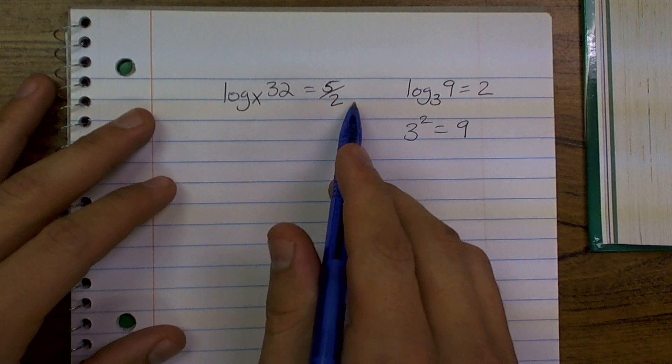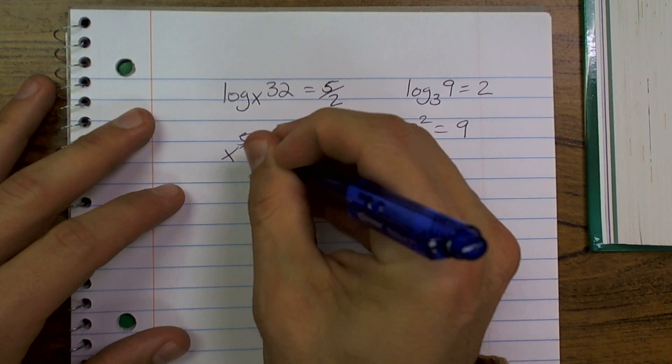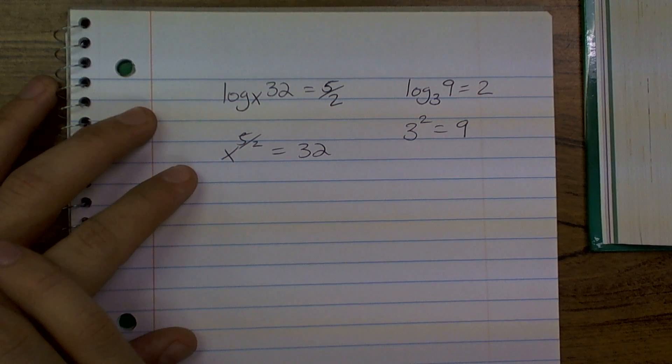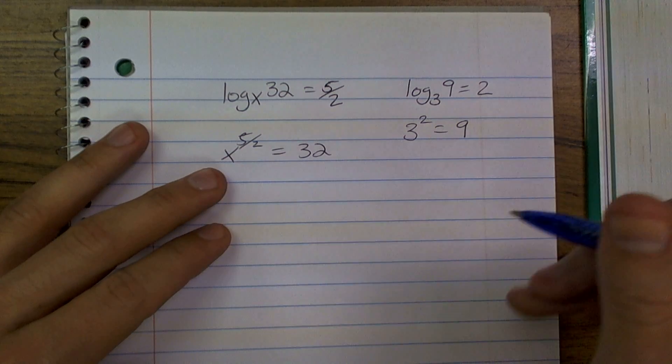So, when looking at this problem, we're going to do the same thing. x to the 5 halves equals 32. Now, I've come up to a little problem here, right? Because how am I going to get rid of 5 halves?